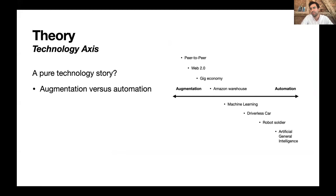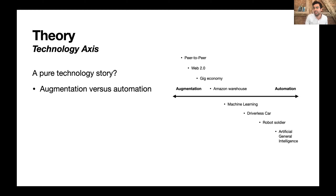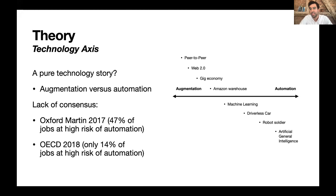These texts provide what I think of as a pure technology story. They take a variety of technologies and array them on a single axis between automation technologies on the right-hand side and augmentation technologies on the left. Augmentation technologies improve worker productivity but keep them in their jobs, whereas automation technologies replace them. There is a real lack of consensus about this technological account.